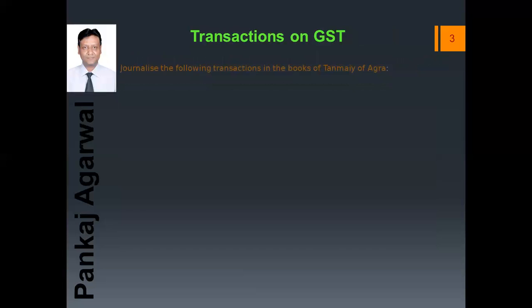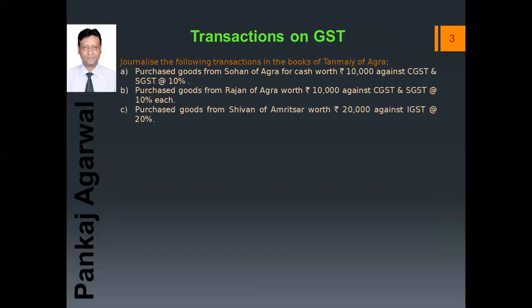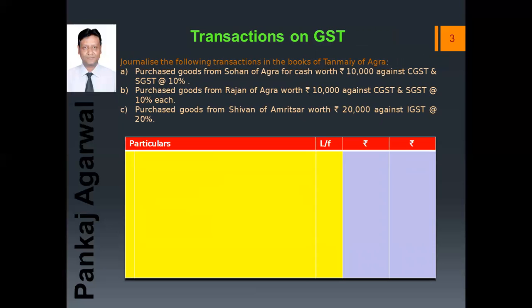So let us understand this by an example. The first example is: purchase goods from Sohan of Agra for cash worth ₹10,000 against CGST and SGST at the rate 10%. Here in this question, since the word 'each' is not given after 10%, the total of CGST and SGST together will be 10%, meaning CGST will be 5% and SGST will be 5%. So the journal entry will be: Purchases Account debit, Input CGST Account debit, Input SGST Account debit, to Cash Account.